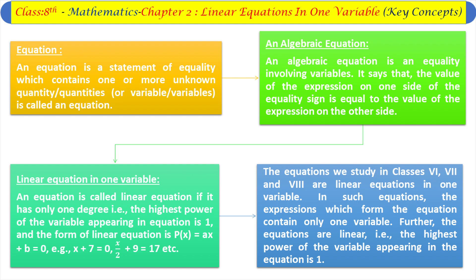A linear equation in one variable is an equation called linear if it has only one degree — that is, the highest power of the variable appearing in the equation is one. The form of a linear equation is ax + b = 0. For example: x + 7 = 0, or x/2 + 9 = 17.